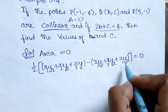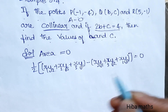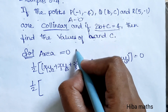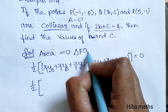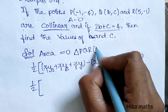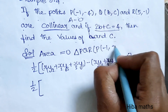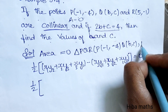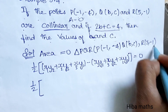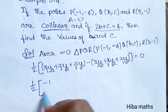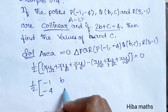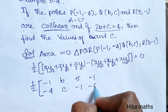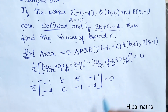Now we substitute the coordinates into the triangle PQR formula. P is the point (-1, -4), Q is the point (b, c), and R is the point (5, -1). So we place: minus 1, minus 4 above; b, c above; and 5, minus 1 — equal to 0.